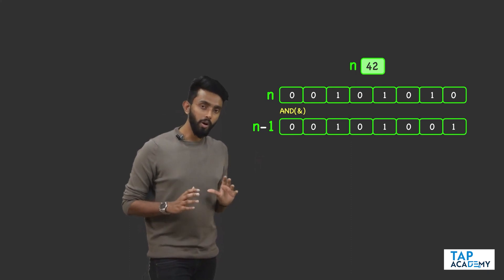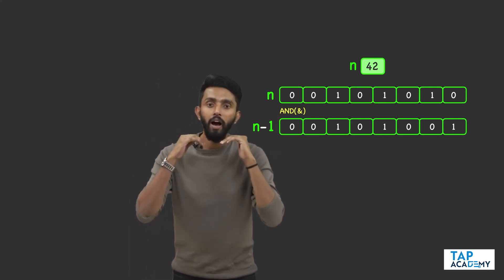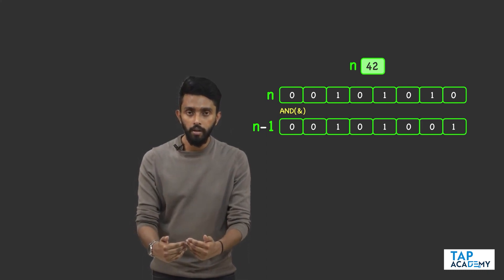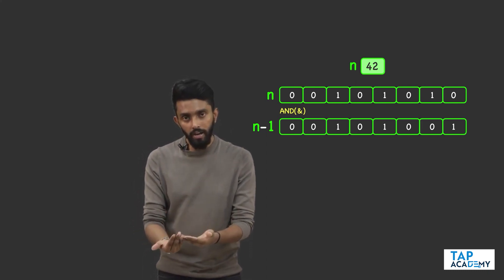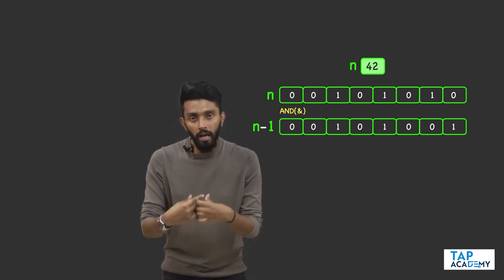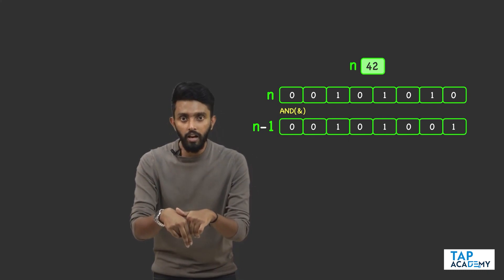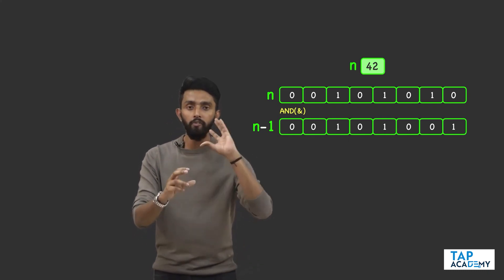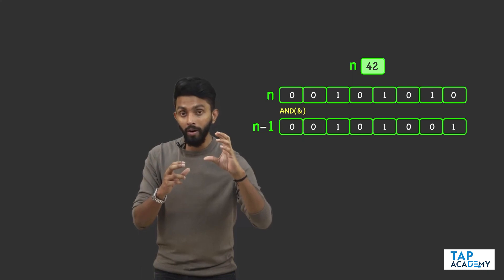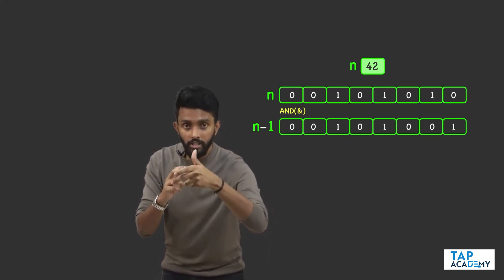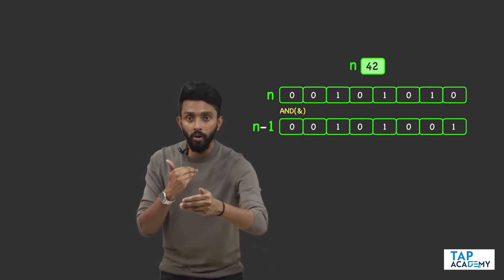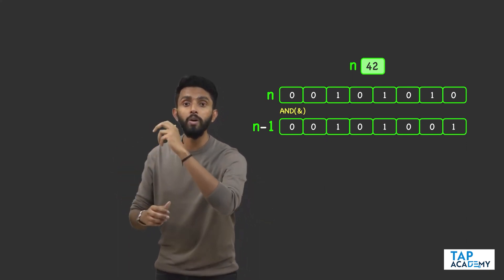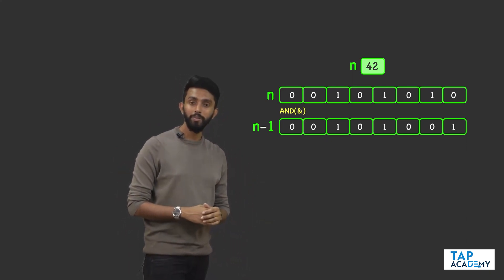If I have unset the rightmost set bit, in a way it is like I am counting. Every time I unset the rightmost set bit, it is like me counting. First I have unset it — one I have found. Next rightmost I unset it — next one I have found. Next rightmost I unset it — next one I have found.